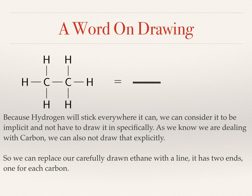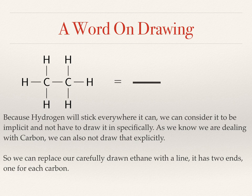Time to let you in on another secret: scientists are lazy. Why spend all of our time drawing C's and H's when instead we can just draw some lines? We completely throw away the hydrogen, and then we just draw a line everywhere there's a bond between carbon atoms. So in the example on the slide, we turn the whole ethane molecule into a single line — this line represents the bond between the two carbon atoms. We implicitly know there's a carbon atom on each end of the line and hydrogens fill in all the other bonds. When you get very complicated molecules, you don't actually need to see all the atoms explicitly, and you might not have space on your page to draw in all the C's and H's. Drawing molecules this way is called the skeletal form.